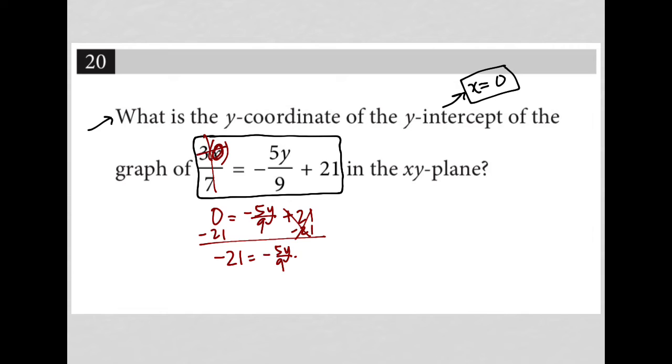I'd then multiply both sides by negative 9 fifths. And that way I'd have just y, right? Because this would cancel out. I'd have just y over here on the right-hand side. Now, what would happen on the left-hand side? Well, I'd have, like a negative 9 over 5, basically times a negative 21, practically over 1.